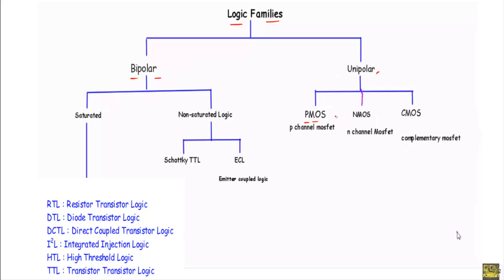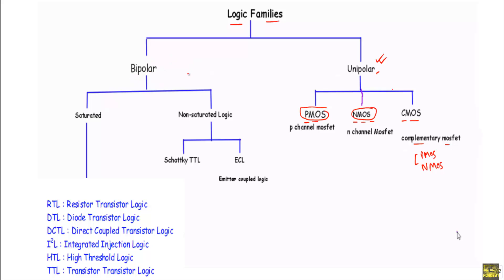The three unipolar types are: P-type enhancement MOSFET (PMOS), N-type enhancement MOSFET (NMOS), and Complementary MOSFET (CMOS — complementary metal oxide semiconductor field effect transistor). If we use PMOS to build the logic circuit, that circuit will be a unipolar circuit. Similarly for NMOS. For CMOS, we must use at least one PMOS and one NMOS together.